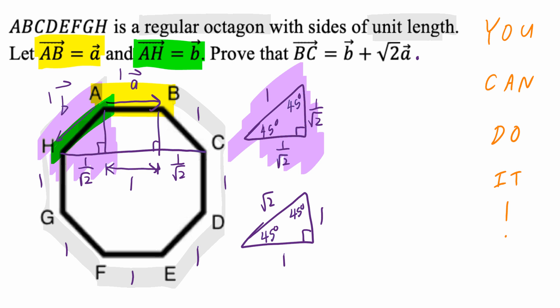Now, here's how we prove the following. Write down RTP. That stands for required to prove. Vector BC equals to B, or vector B, plus root 2, vector A. Now, if I start with the left-hand side, that's going to be vector BC. And if you keep going, think about vector BC.